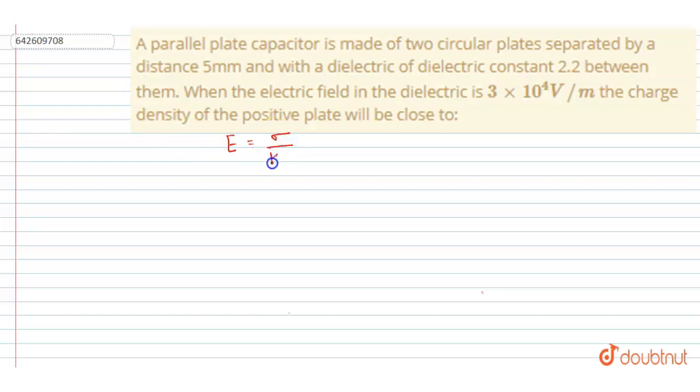sigma by K epsilon naught. So what we want here, we want this sigma. So what we will do, sigma equals E times K into epsilon naught. So we know the value of E is this and we